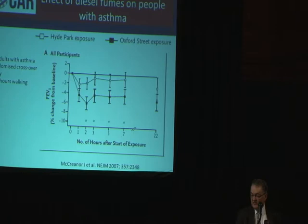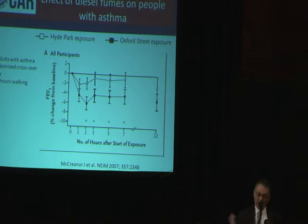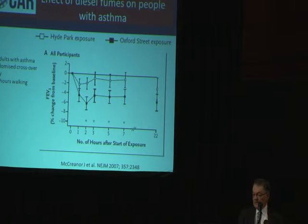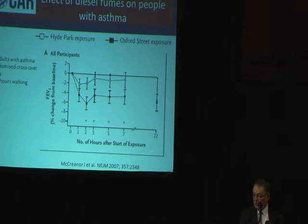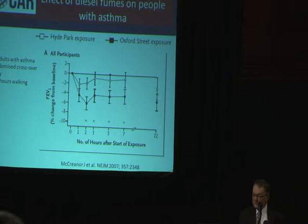We've done a couple of studies using a different approach. This is a study that was quite famous in London in the early 2000s, in which 60 adults with asthma were asked to walk up and down Oxford Street for two hours, then walk around in Hyde Park — a relatively clean environment not very far away — and their lung function and other things were measured. Comparing the same individuals, their lung function declined more when walking along Oxford Street than when walking in Hyde Park.